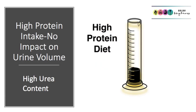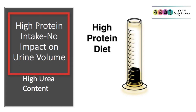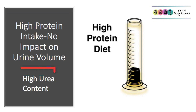One final scenario to consider is the impact of high protein intake on urine volume. If there is a lot of excess protein, it will be broken down in the liver to produce urea, and urea will be excreted in the urine. This will have no impact on the volume — you'll just produce a normal volume of urine with a high concentration of urea.